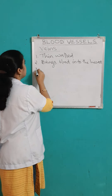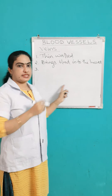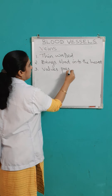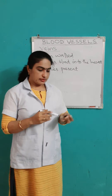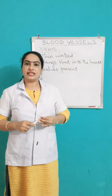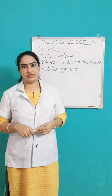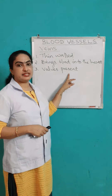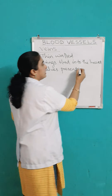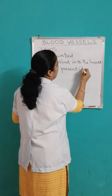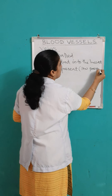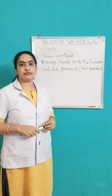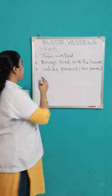The third point is that veins have valves. In case of veins, the blood flows under low pressure only, so there is a chance of backflow of blood. Therefore, valves are needed to prevent the backflow, because blood is transported under low pressure and there is a chance of backflow. Valves are present in case of veins.